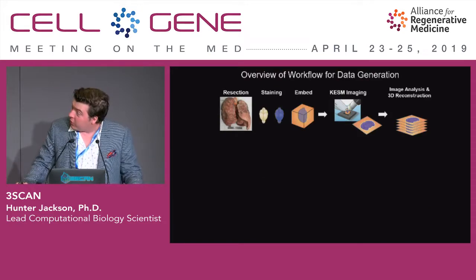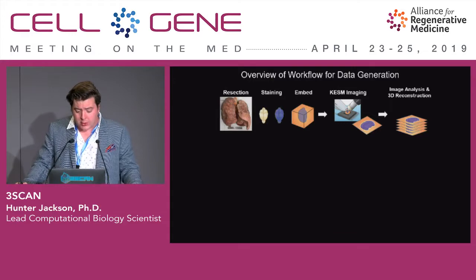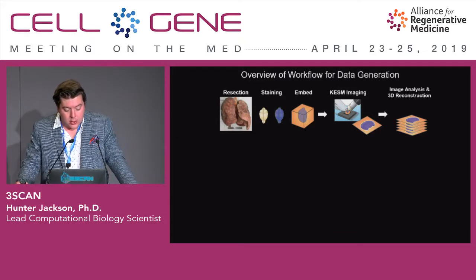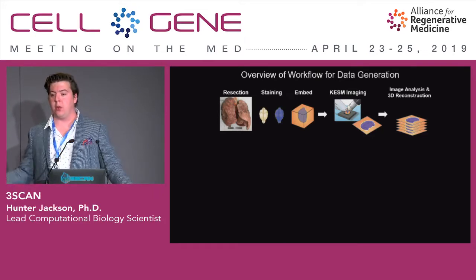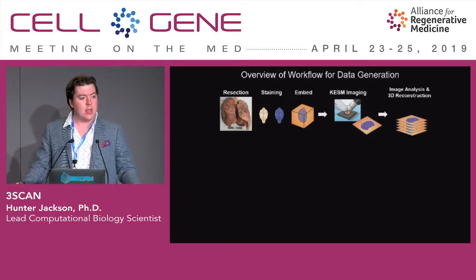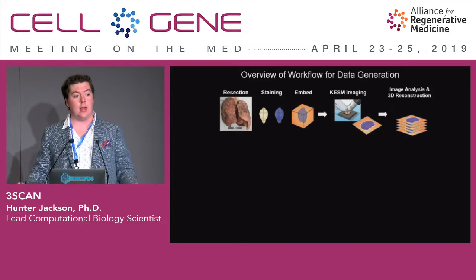This is an overview of the workflow for how we generate the data. Following resection, tissue samples are fixed in formalin and embedded in paraffin, and then whole block stained. We don't do individual section staining — we stain the whole block and mount it, which gives us unique opportunities to develop staining protocols, though there are some limitations around antibody staining and neuronal staining.